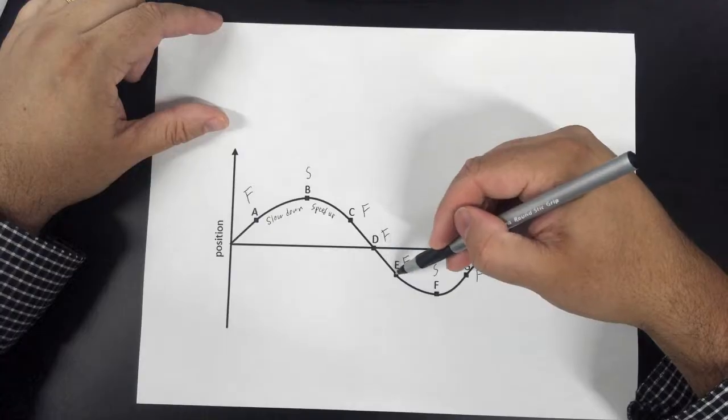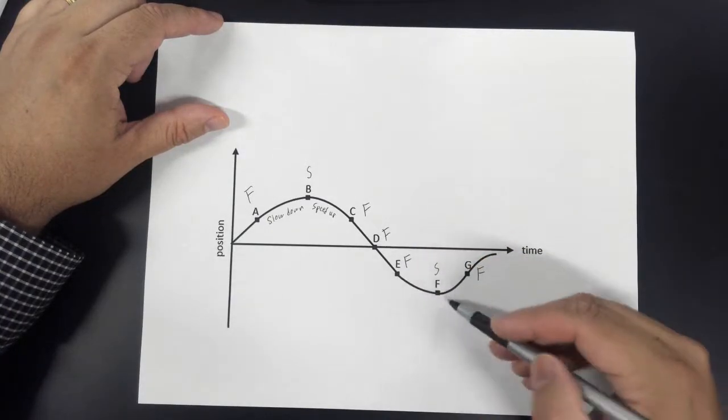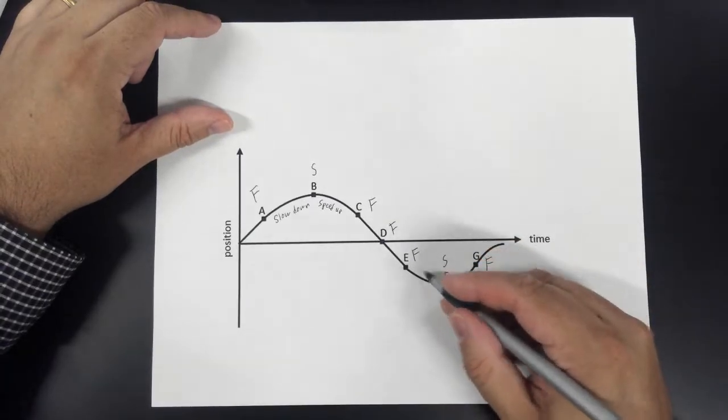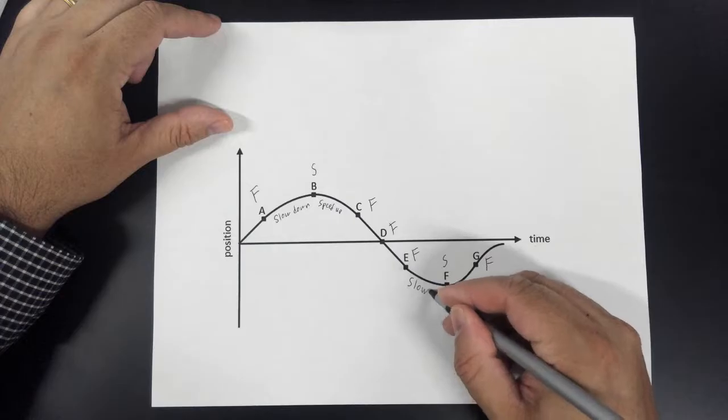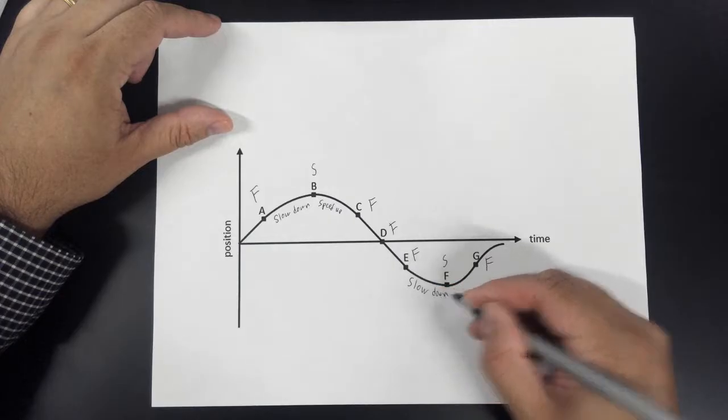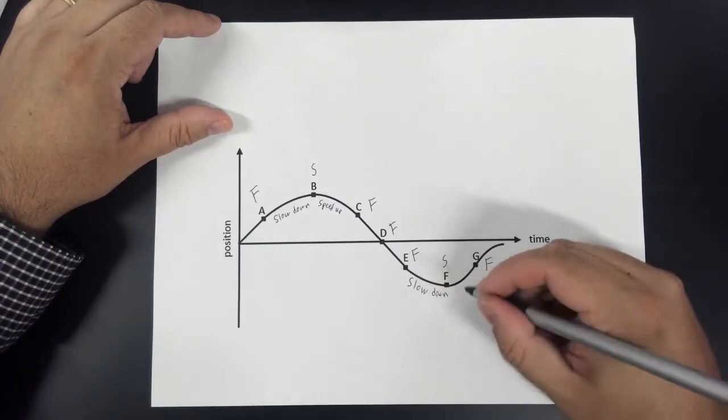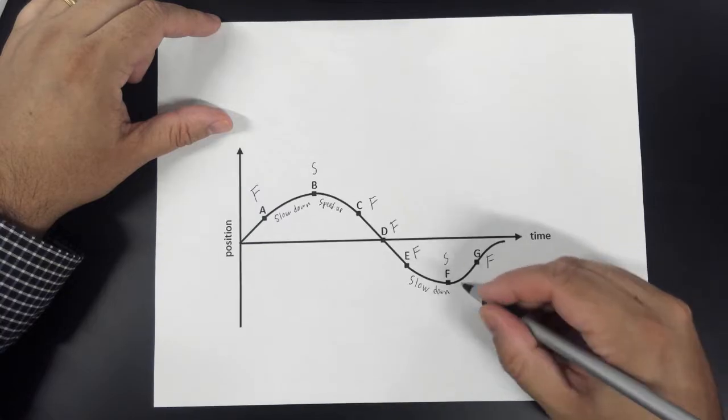Right here, it doesn't change much until we get here. From E to F, it's also going to slow down because we see this slope is getting less steep. And between F and G, it's going to speed up because the line is getting steeper and steeper.